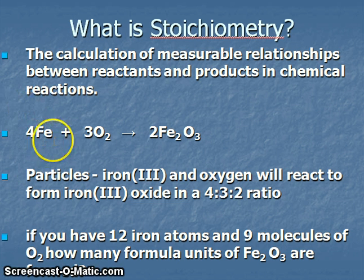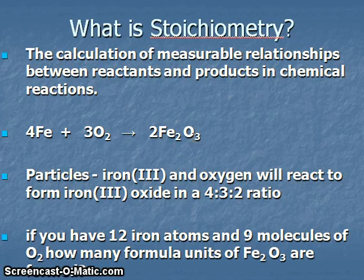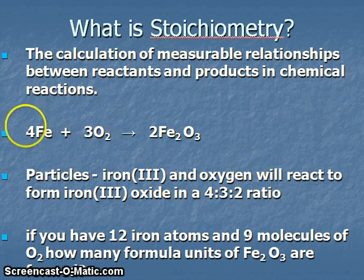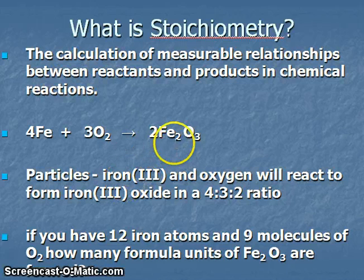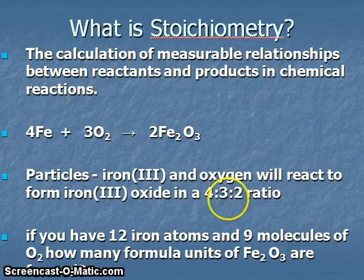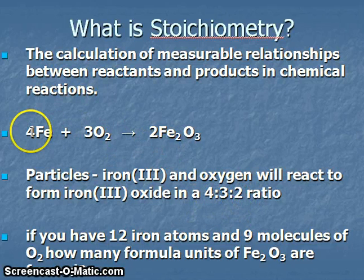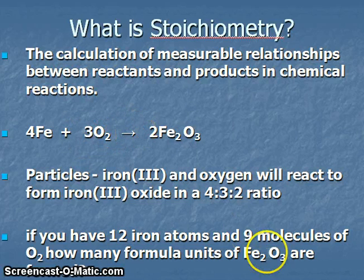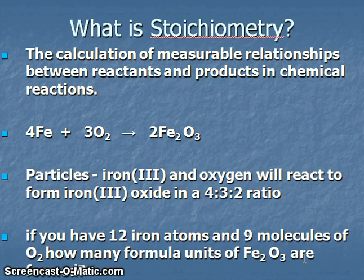Iron oxidizing means it's reacting with oxygen to form an iron oxide compound. Based on the information that we know about these different elements, we know that in this particular reaction we will produce iron oxide from iron and oxygen in a 4:3:2 ratio. I'm getting these numbers — 4, 3, 2 — from the coefficients used to balance the chemical reaction. What this means is that at the particle level, I just always need to conserve these ratios of 4:3:2.